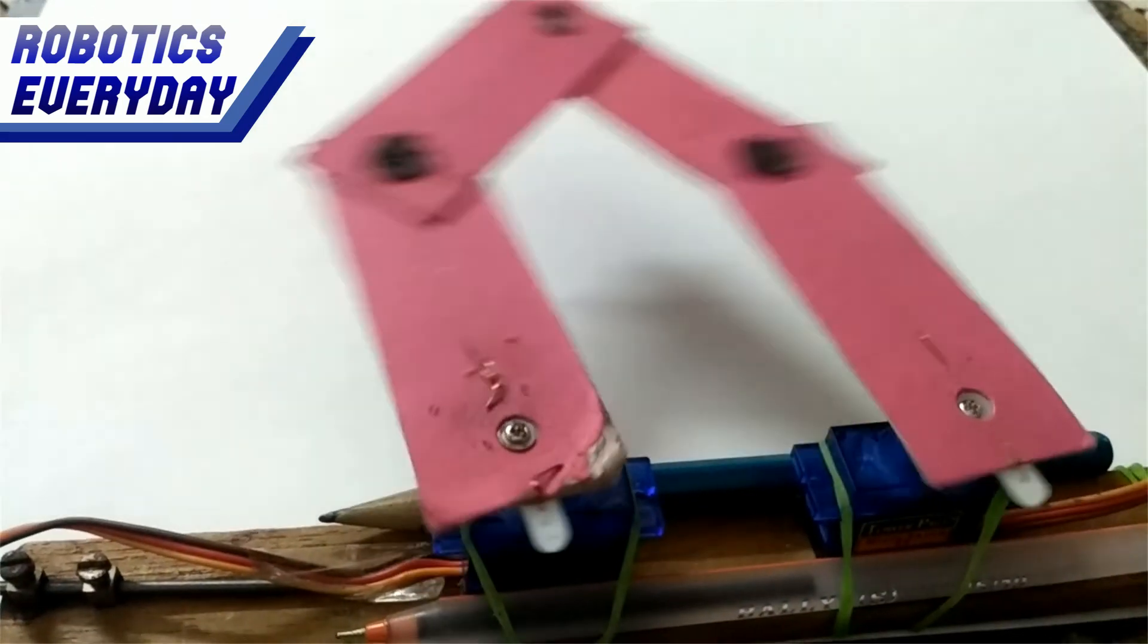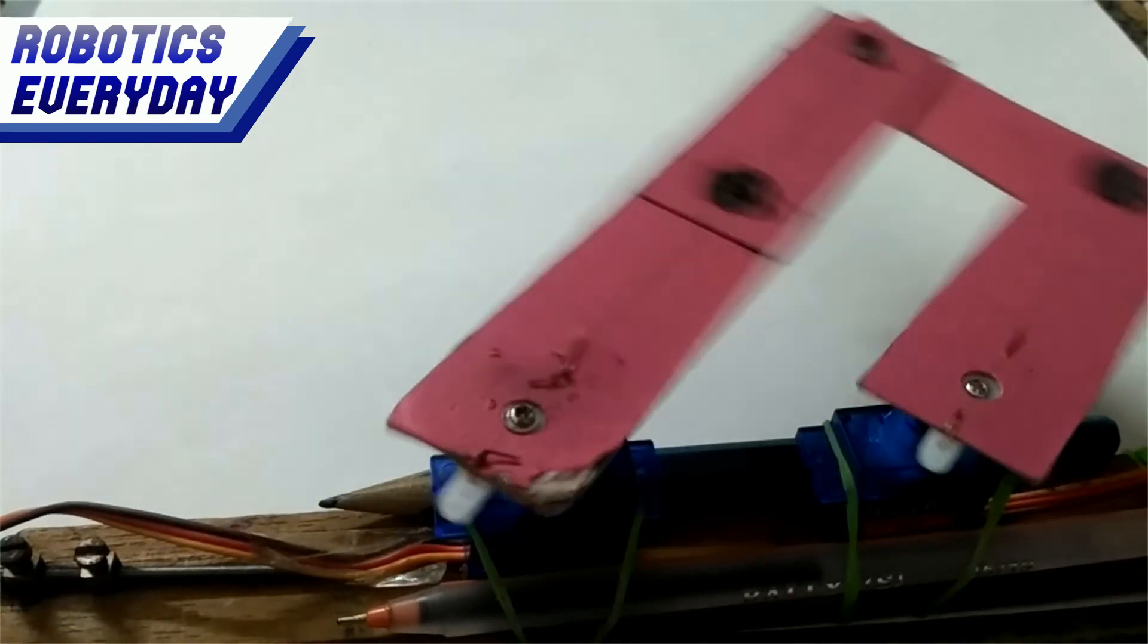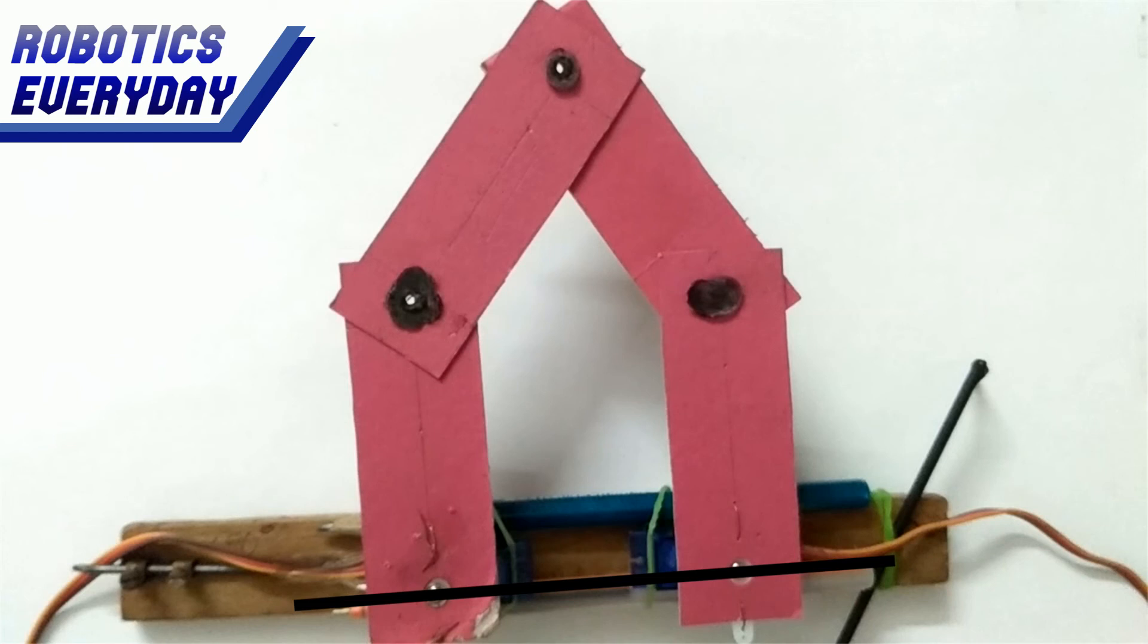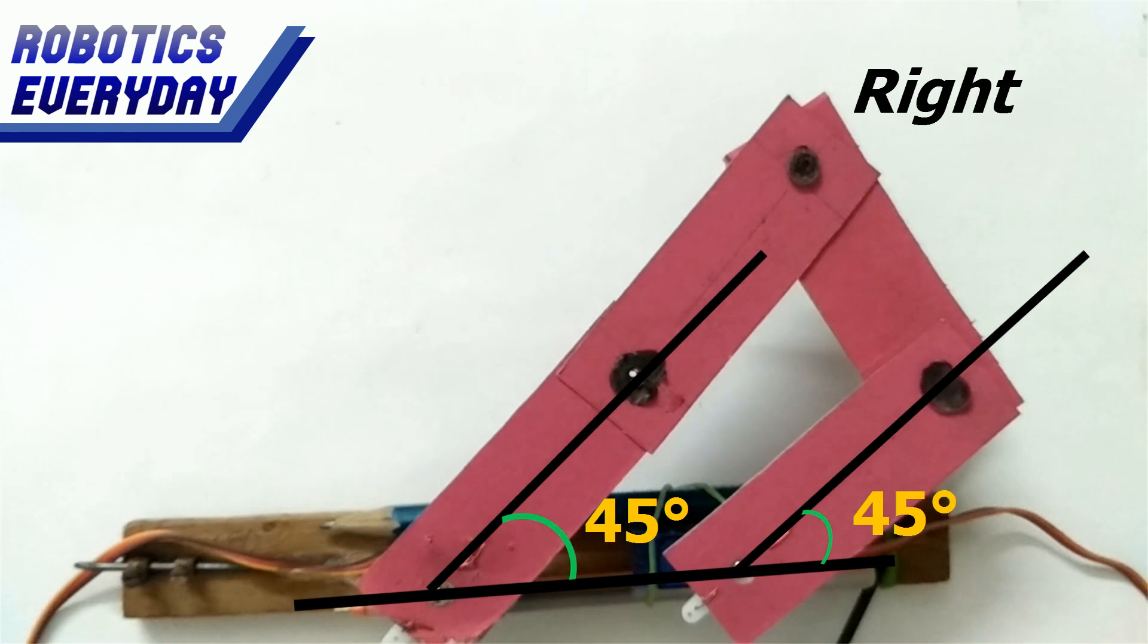There are two motors which can be rotated synchronously or asynchronously depending on the mission. When both the rotors are at 90 degrees, then the point achieved is the topmost. When both the rotors are at 45 degrees, then the extreme right point is achieved.